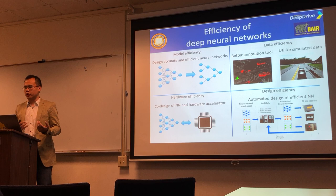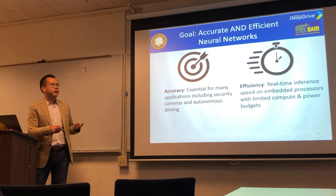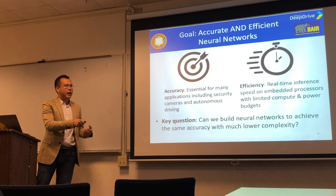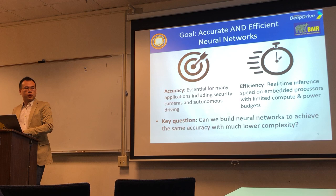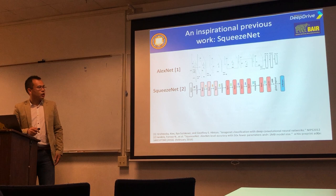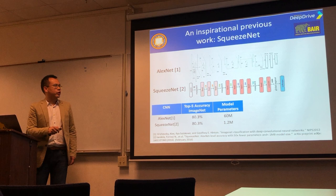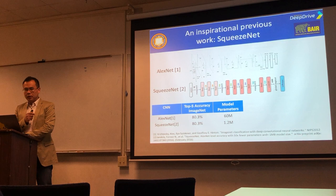Let's start with model efficiency. In many applications, we need neural networks with both high accuracy and high efficiency. It's commonly believed that accurate models must be large and complex, but the key question is: can we prune a neural network to achieve the same accuracy with lower complexity? This question was partially answered by the inspirational work of SqueezeNet by Forrest and Kurt's team, showing that for image classification, we can reach AlexNet-level accuracy with 50x smaller parameter size.